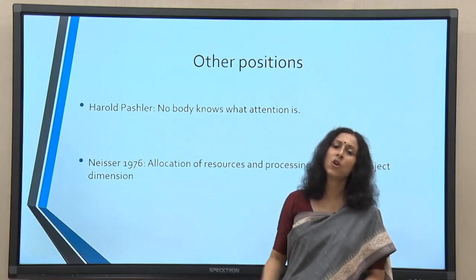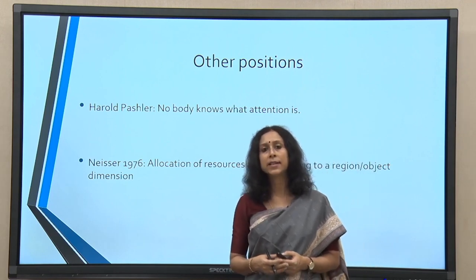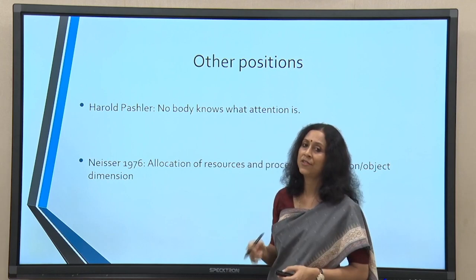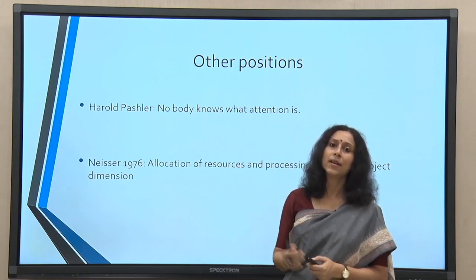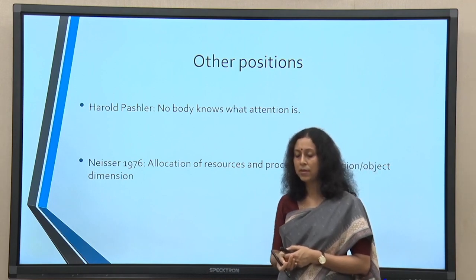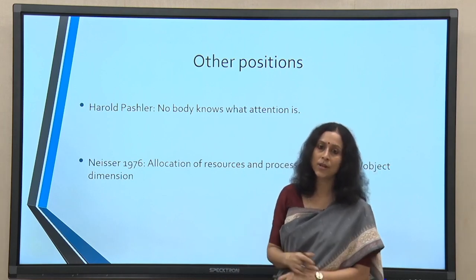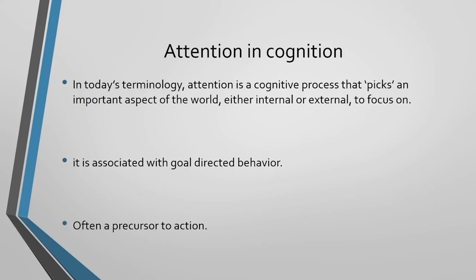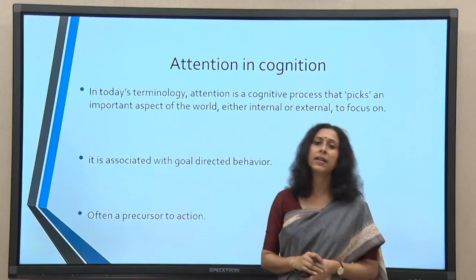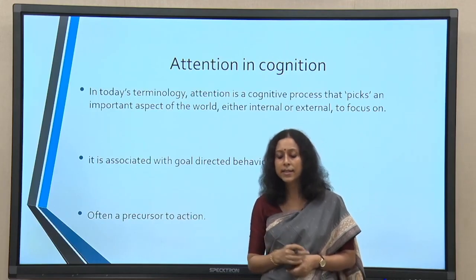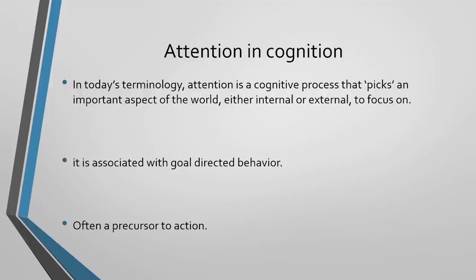In today's terminology, things have not changed — only the terminology has changed, and we have a better understanding of various mechanisms in finer detail. Attention is defined as a cognitive process that picks an important aspect of the world, either internal or external, to focus on. It focuses on one particular aspect — belonging either to the external world such as the visual or social domain, or to a particular idea or thought happening inside our mind at any given point of time.